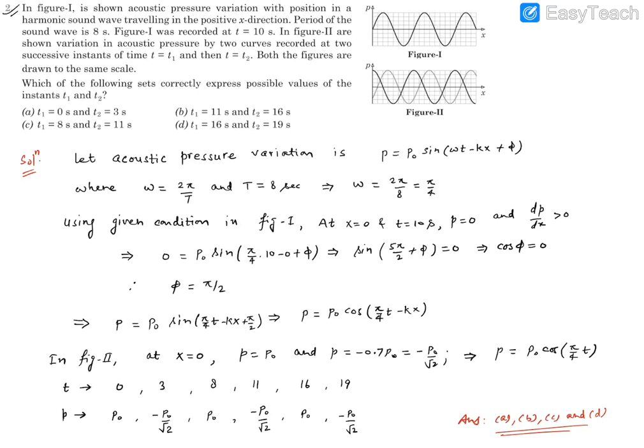Question number second. It reads: in figure one is shown acoustic pressure variation with position in a harmonic sound wave traveling in a positive x direction. Period of the sound wave is 8 seconds. Figure one was recorded at t equal to 10 seconds.